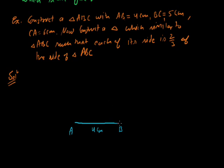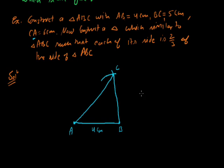BC is 5 cm and CA is 6 cm. Take B as center with radius 5 cm and draw an arc, because BC length is 5 cm. Then take A as center with radius 6 cm and draw another arc. Where the two arcs cut, that is point C. Connect A to C and B to C. This is our given triangle ABC.